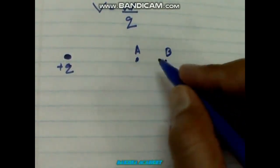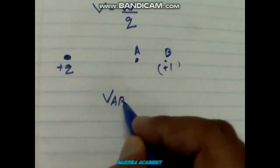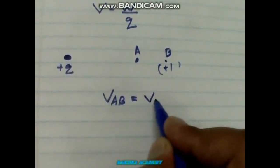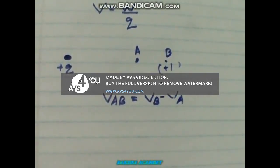We can consider two points. Suppose there is a charge plus q, and we can consider two points A and B. The potential difference between points A and B can be written as Vab, where Va and Vb are the potentials at points A and B respectively.